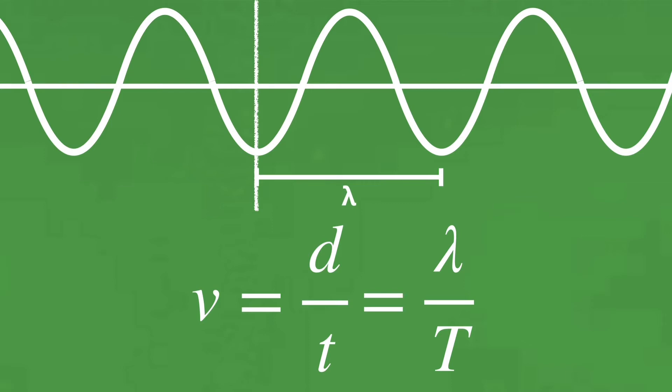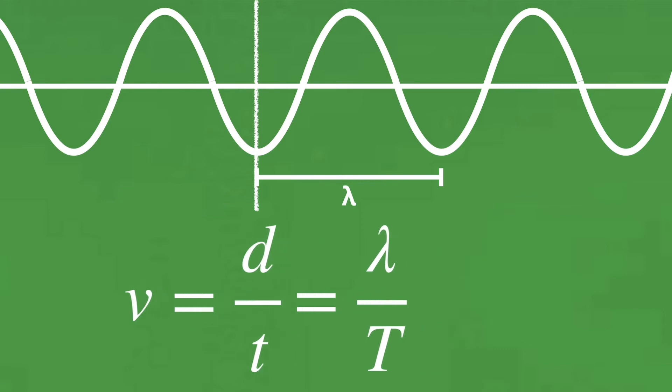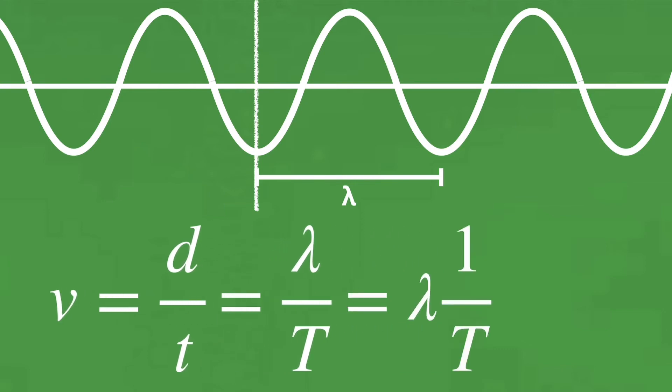This is already a version of the universal wave equation, really. But 1 over T equals f, the frequency, so we can substitute that in and presto, we've derived the universal wave equation in its usual form.